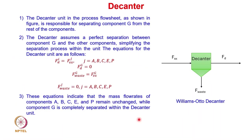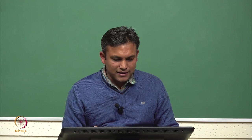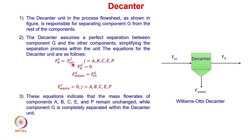The next unit is the decanter, which is primarily used to remove the waste byproduct G. The decanter assumes perfect separation between component G and the other components. The mass flow rates of all components except G are the same as obtained after the heat exchanger: Fd_J = Fj_Ex for all components J ≠ G. The mass flow rate of G in the decanter output, Fd_G, equals zero.